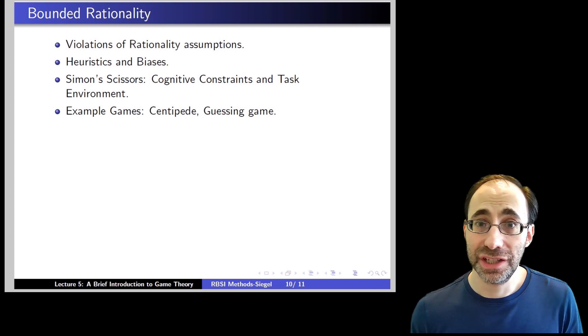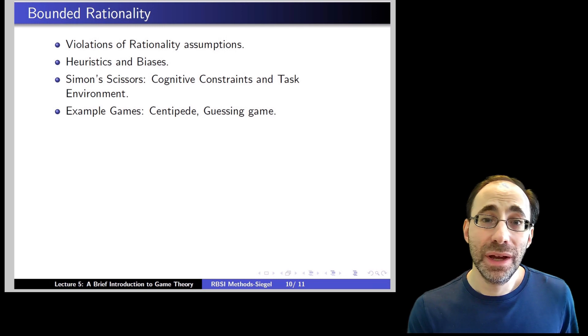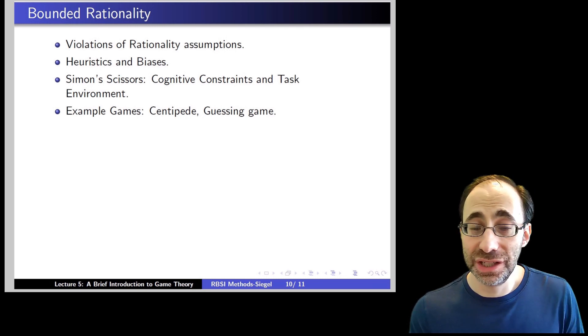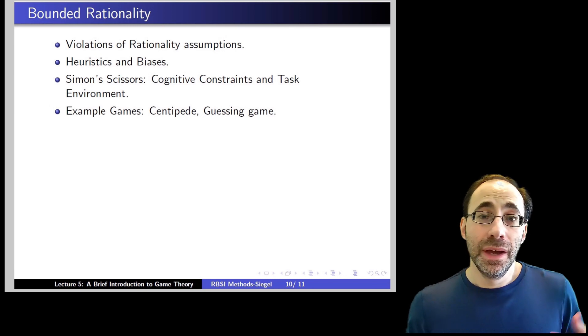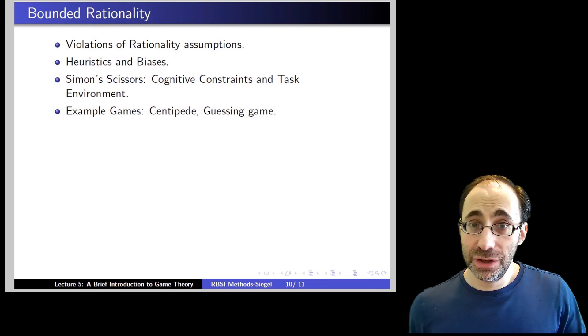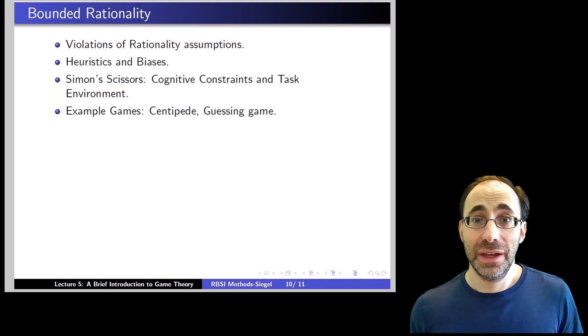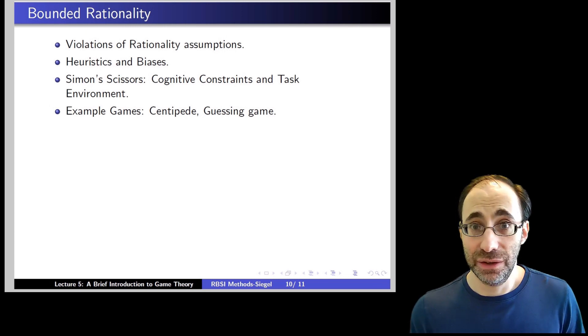One, individuals had complete and transitive preferences. And two, individuals could make optimal decisions given their preferences and the constraints they were under. However, even though we've been using those rational choice assumptions throughout, in real life, individuals often violate those assumptions.